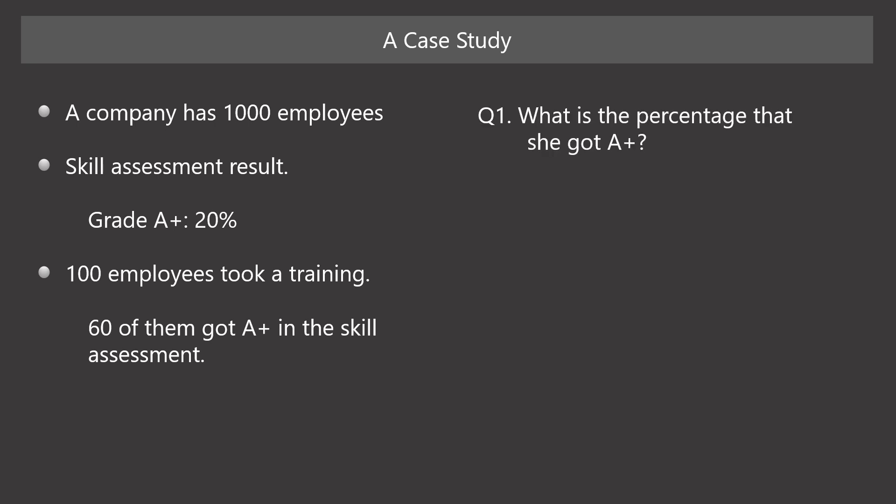Question 1: What is the percentage that she got A+ grade in the assessment? We have no information about her skill, but we know that 20% of employees got A+. So we think that it is around 20%. This is the usual probability problem.